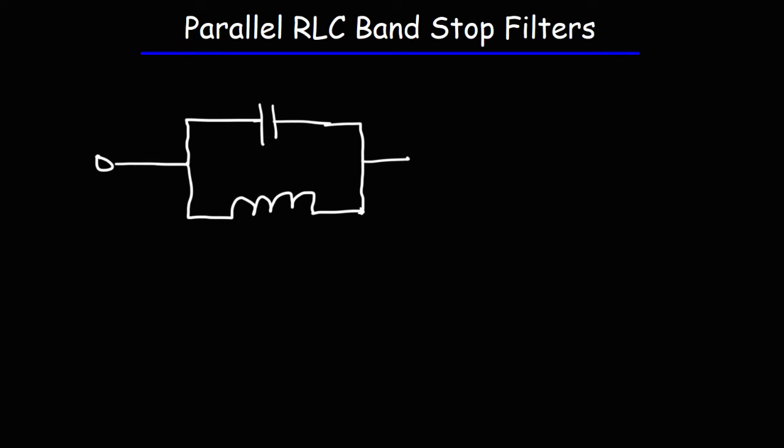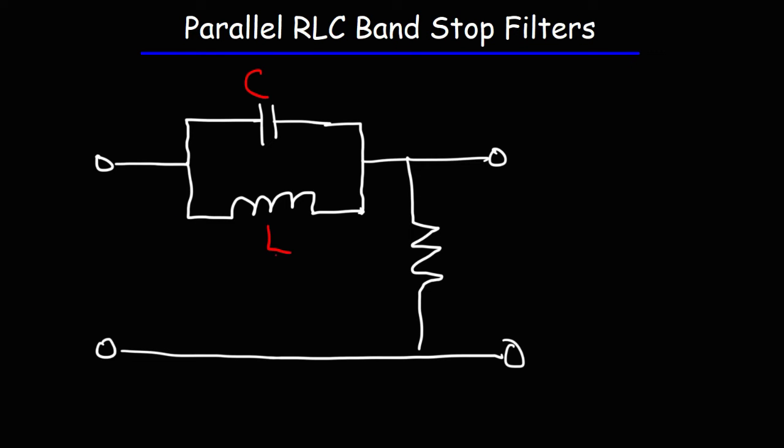Now let's design a circuit. What we need is the capacitor and the inductor to be parallel to each other, and then the resistor is going to be across the output. This is C, this is L, and this is R. That is the parallel RLC bandstop filter.